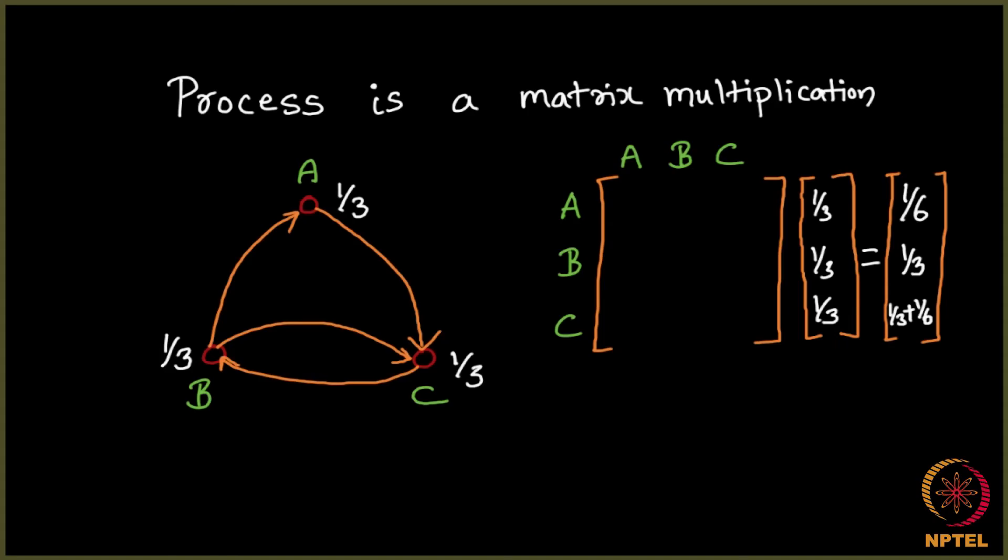Next, a gets 1/6. Why is that? That is because from b, you have two edges going and half is given to a and the other half is given to c and half of 1/3 happens to be 1/6. So it is going to be 1/6 as you can see.